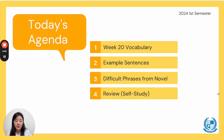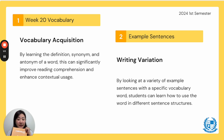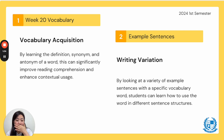So, what is today's agenda? We'll be going over Week 20 Vocabulary, going over the extra example sentences. In the next video, you will go over difficult phrases from the novel, and then after both videos, you will have to review and self-study. But why are we doing this? If you already know why we're doing this, go ahead and skip to the first word, but if you're new this week, continue to listen. This is for Week 20 Vocabulary, and we'll be going over all the vocabulary words for vocabulary acquisition. By learning the definition, synonym, and antonym of a word, this can significantly improve our reading comprehension and enhance our contextual usage.